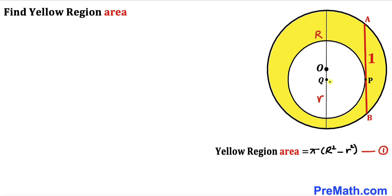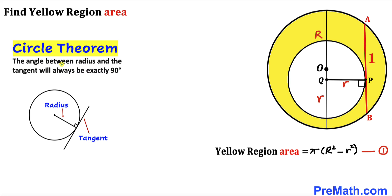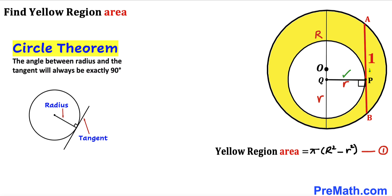Next, let's connect center Q to the point of tangency P. We can see that QP is the radius of the smaller circle, so we label it lowercase r. Now let's recall the circle theorem: the angle between a radius and a tangent line is always 90 degrees. Here QP is our radius and AB is our tangent line, so angle QPB is 90 degrees.